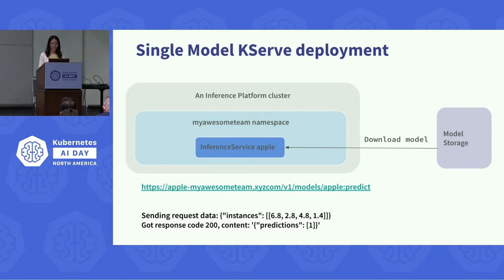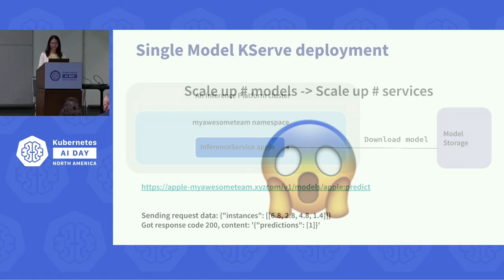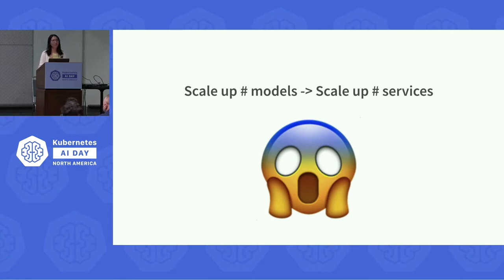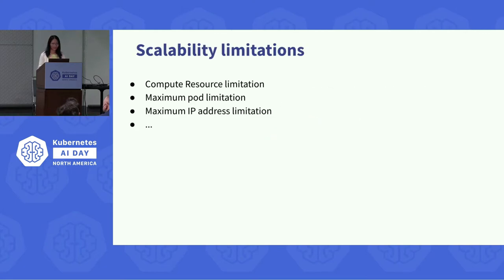In their own namespace, users can run multiple inference services. Each inference service fetches a model from external model storage — such as S3, GCS, or an HTTP service. Once the model is downloaded, the inference service opens up an HTTP endpoint where users can send request data and get an inference result back. The problem is that if we want to scale up the number of models, we essentially need to scale up the number of services we run, which doesn't scale very well.